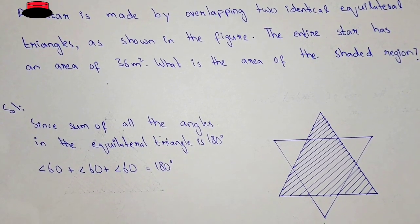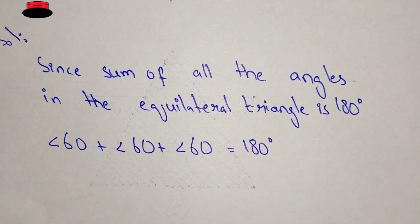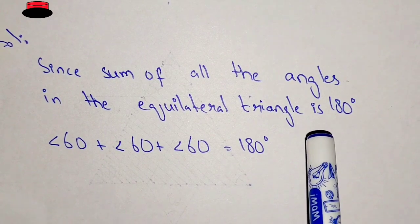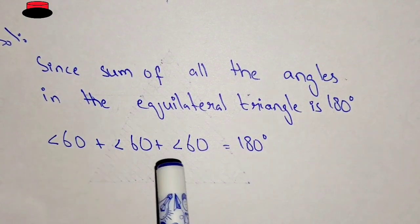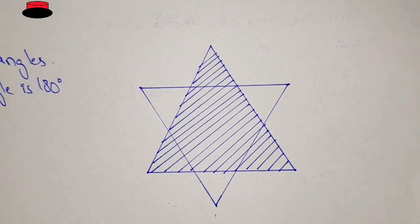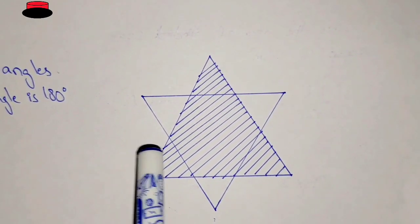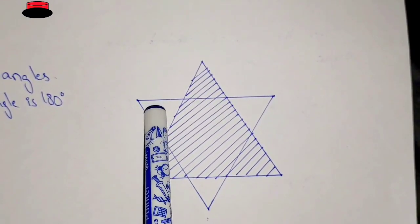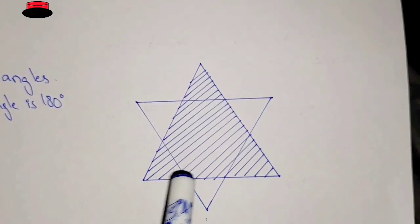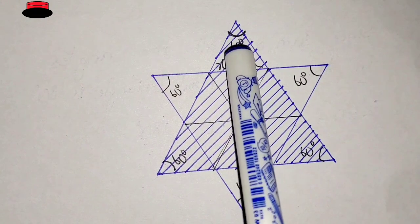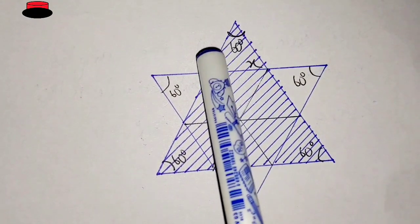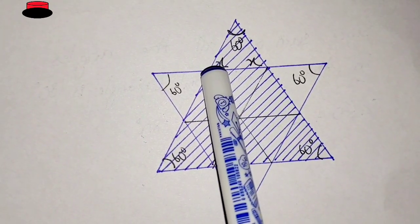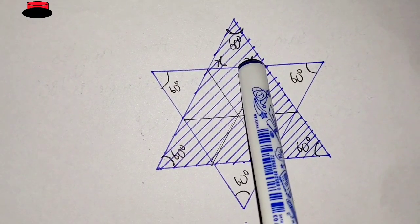Since we know that the sum of all angles in an equilateral triangle is 180 degrees, all angles are 60 degrees. So all angles in this star are 60 degrees — these three angles in one triangle and these three angles in the other. Now, this small inner triangle has one angle of 60 degrees, and since its two sides are equal (isosceles), the other two angles are also equal. Let's call each of them x.